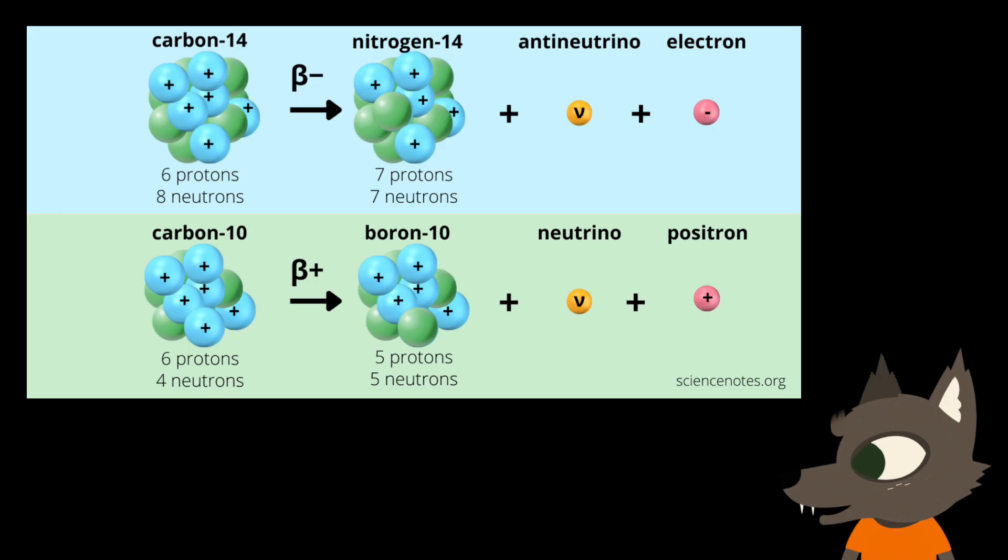As a side note, it's also possible to have beta-minus decay, where a neutron is converted into a proton and ejects an electron and antineutrino. It seems weird to me that a neutron can be converted into a proton plus some other particles, while a proton can also be converted into a neutron plus some other particles. How can we go back and forth between a proton and neutron and still have particles left over?